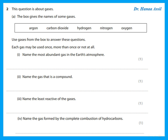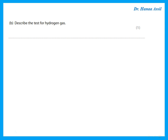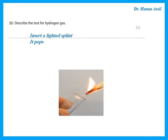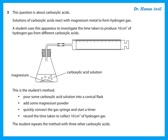This question is about gases. The most abundant gas in the Earth's atmosphere is nitrogen. The gas that is a compound is carbon dioxide. The least reactive gas is the one in group zero — that is argon. The gas formed by complete combustion of hydrocarbons is carbon dioxide. The test for hydrogen gas: insert a lighted splint and it pops.